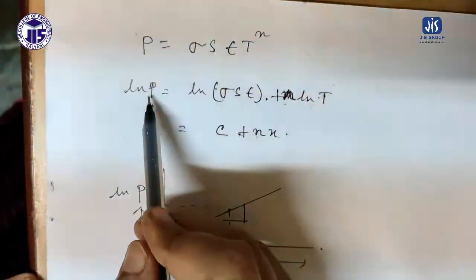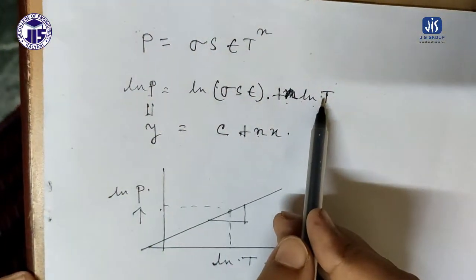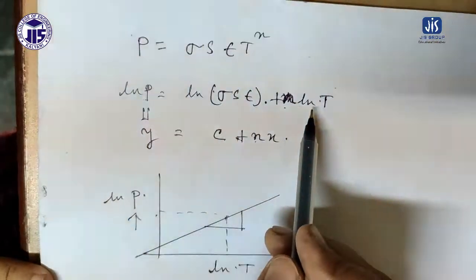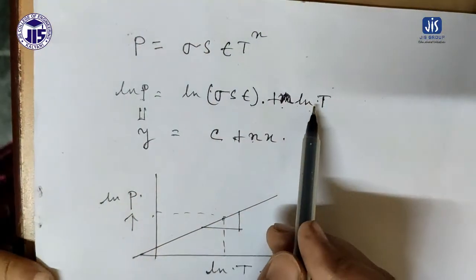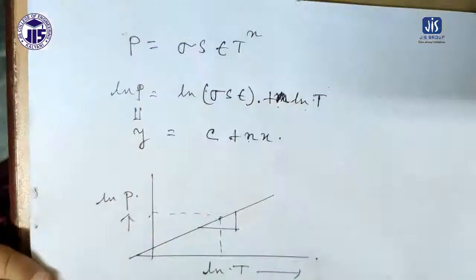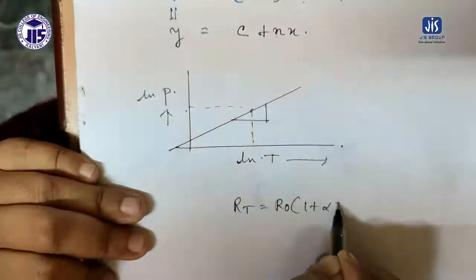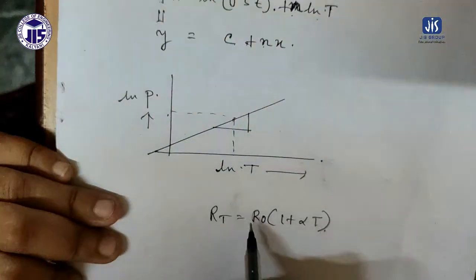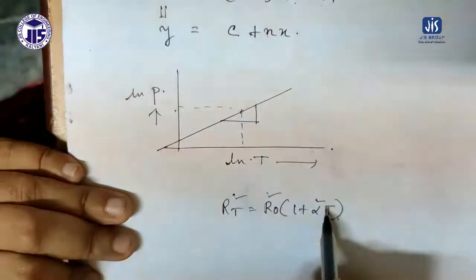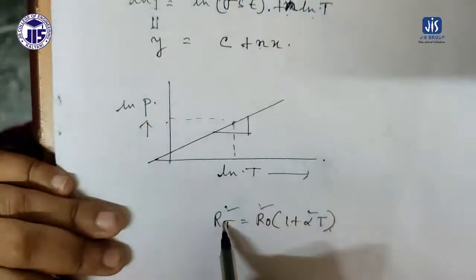We need to measure the power emitted by the black body and its temperature. We cannot measure the filament temperature directly because it is too high — on the order of thousands of degrees. Instead, we use the temperature dependence of resistance: R_T = R₀(1 + αt). If we know R_T, R₀, and α, we can determine the temperature T. So in this experiment we will record the resistance at room temperature and at different temperatures, and since α is supplied, we can calculate the temperature.